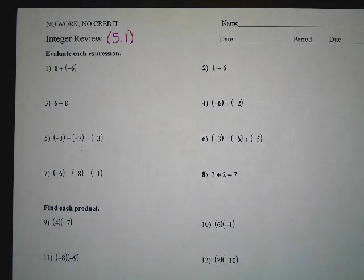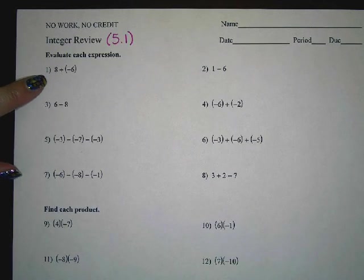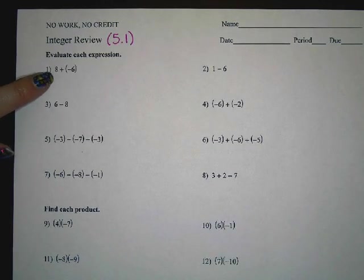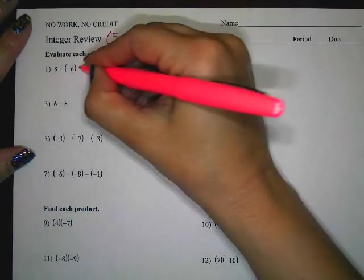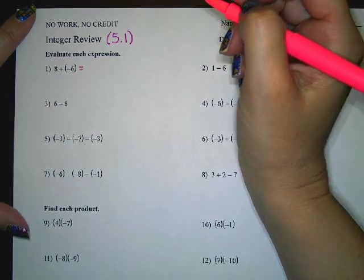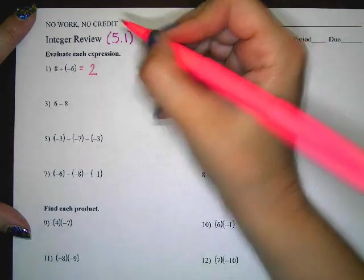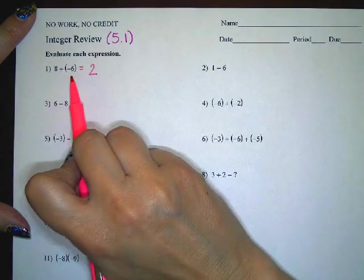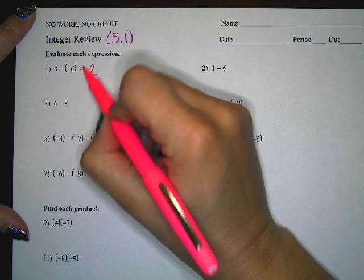We are adding positive and negative numbers. Number one has a positive eight plus a negative six, so essentially we have eight positives and six negatives. The signs are different, so we're going to take the difference. Eight minus six gives me two, and I have more positives than negatives, so it's going to stay a positive two. That's my answer.